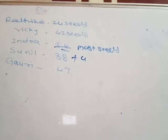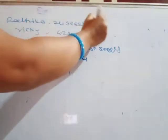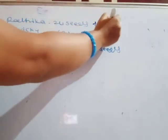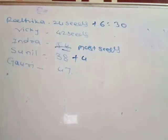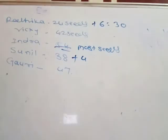If Radhika gets 6 more seeds, then she will have — Radhika had collected 24 seeds, then Radhika gets again 6 more seeds. 24 plus 6 is equal to 30. That means she will have 30 seeds.